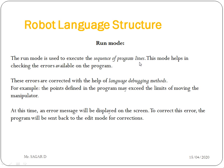The last mode is run mode. Run mode is used to execute the sequence of program lines. This mode helps in checking errors in the program. These errors are corrected using the language debugging method — that is, debugging means correction of errors. For example, if the points defined in the program exceed the movement limits of the manipulator — say the limit is 90 degrees but 100 degrees is entered — an error is shown in run mode, and the program is sent back to edit mode for correction.